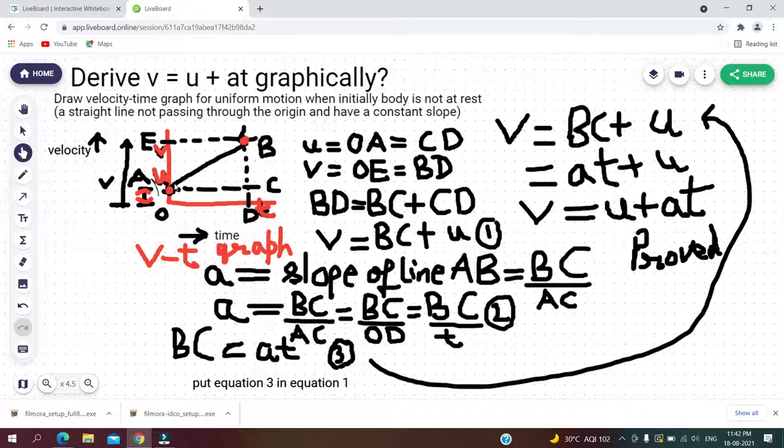Now in between these two points there can be so many points, but as we are not knowing the exact values, we cannot plot them. But we have assumed that the motion is uniform, so definitely we need to draw a straight line between these two points A and